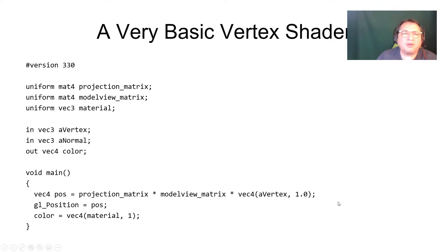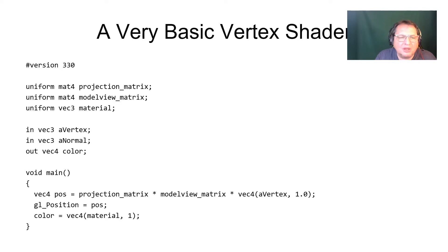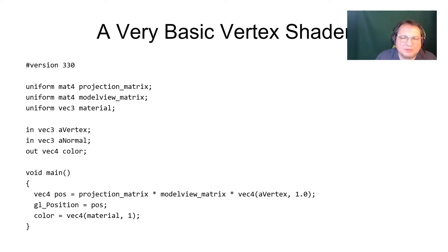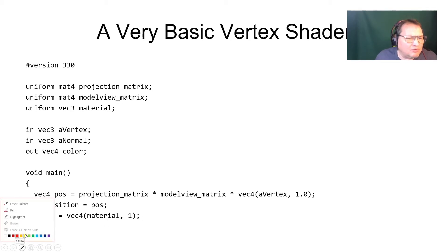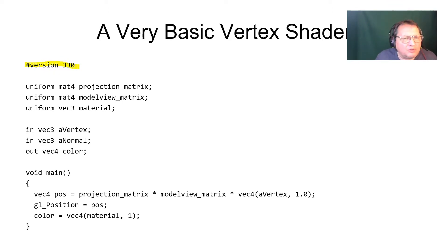Here is a very simple vertex shader. A vertex shader is a small program which processes vertex information and should produce the transformed position of a vertex and most often the color. As you can see, the syntax is indeed similar to C. A GLSL program should start with a directive specifying the version — 330 in this case, which is the minimum version. So this program will be compatible with all versions of OpenGL 330 and above.